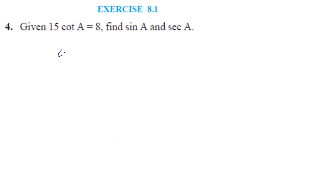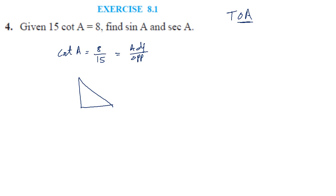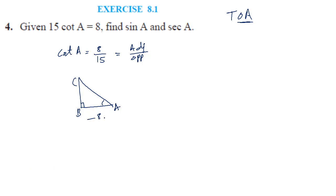Question 4: cot A is given as 8 by 15. Cot is the reciprocal of tan, which is adjacent by opposite. So let's mark angle A in the triangle — adjacent side is 8 and opposite side is 15. We need to find side AC, which is the hypotenuse.